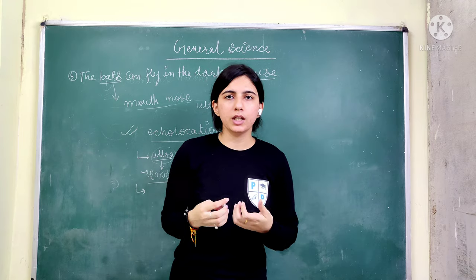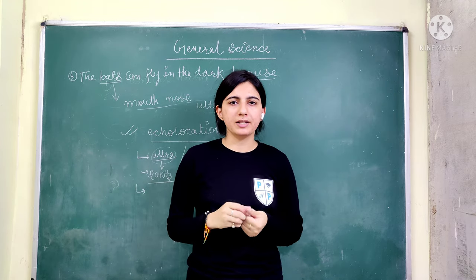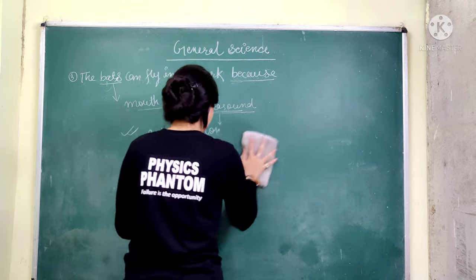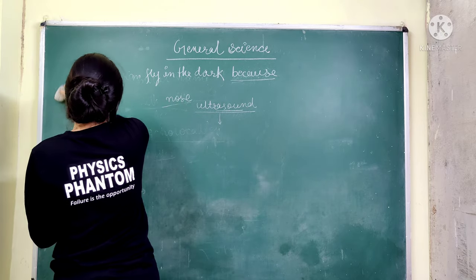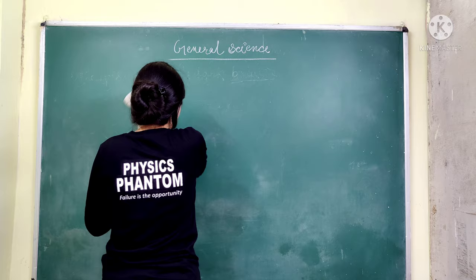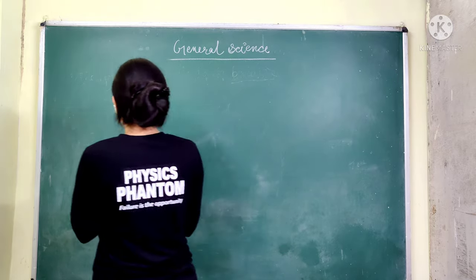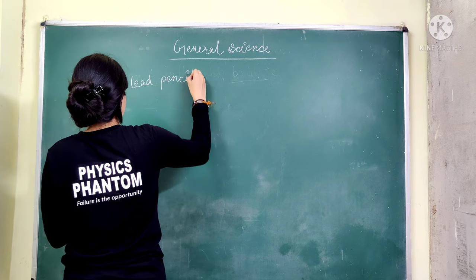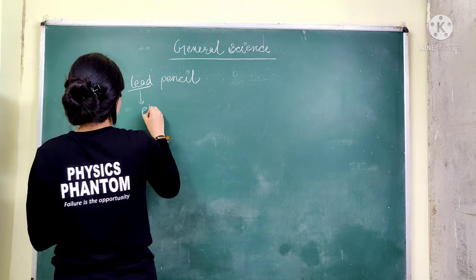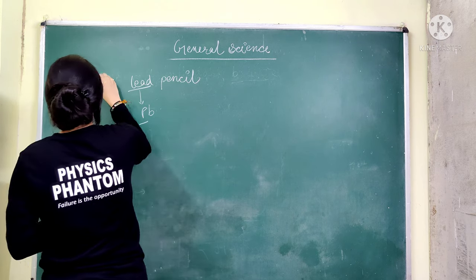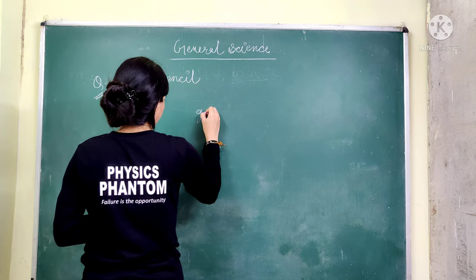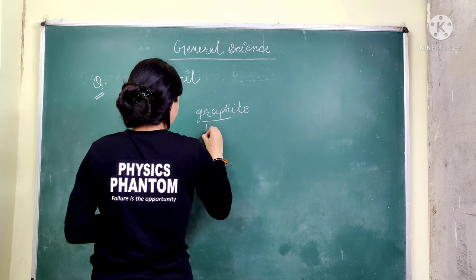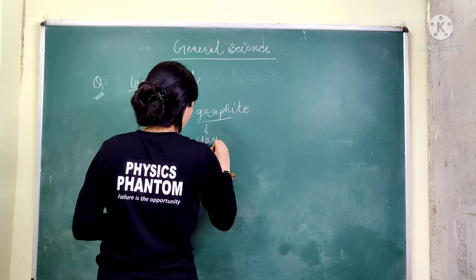The next question is: which material is used in the manufacture of a lead pencil? The answer is graphite. Even though it is called a lead pencil, it does not contain the element lead. The main material used is graphite.